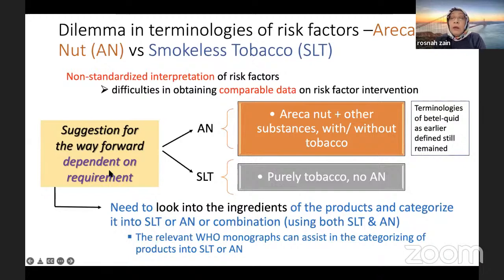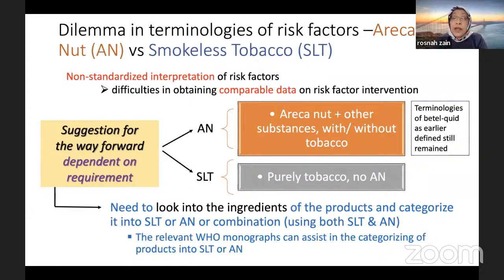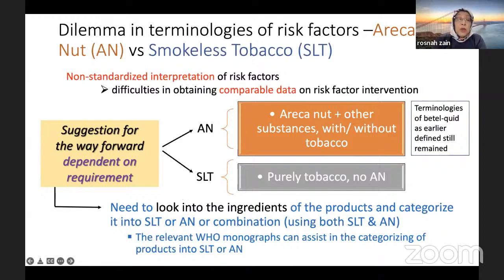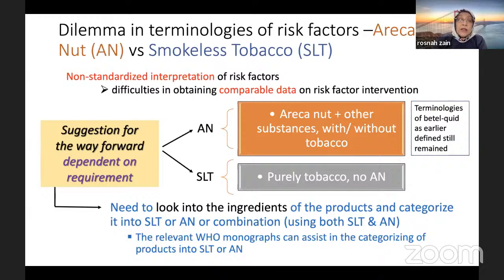This doesn't mean we throw away our existing terminologies — the betel quid terminology is still correct as defined. The suggestion to re-categorise is only if required for your research purpose. However, many studies in Taiwan mainly use betel quid and would still use that term. The key issue is the understanding of content and terminology. Therefore, we need to look into ingredients of products and categorise into smokeless tobacco, areca nut, or a combination, using relevant WHO IARC monographs to assist.